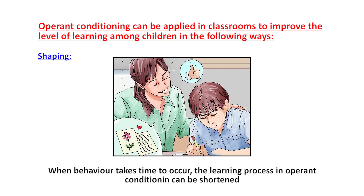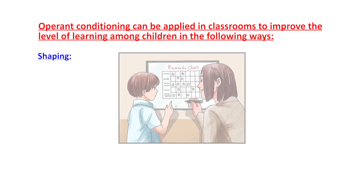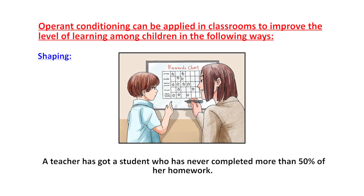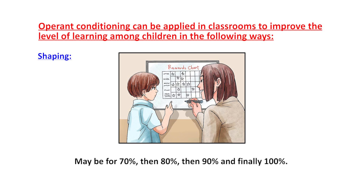The second application in education is shaping — a process of rewarding approximations of the desired behavior. When a behavior takes time to occur, the learning process can be shortened by rewarding successive approximations of the desired behavior. For example, if a student has never completed more than 50% of her homework, the teacher could set the target at 100% but reward her for successive approximations — first 70%, then 80%, then 90%, and finally 100%.